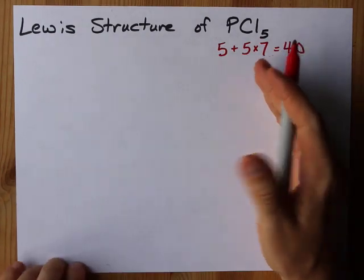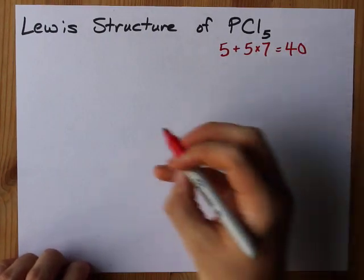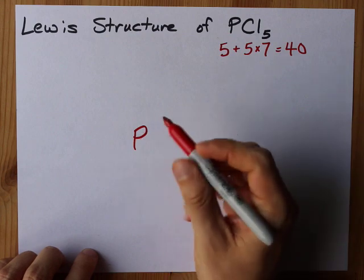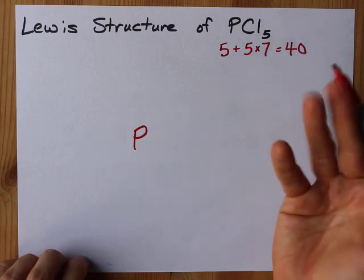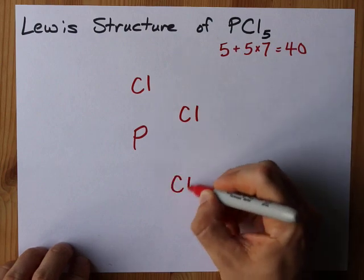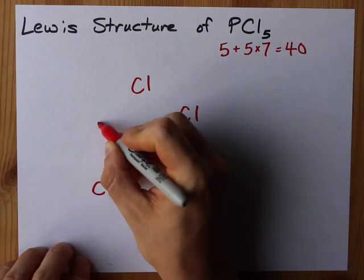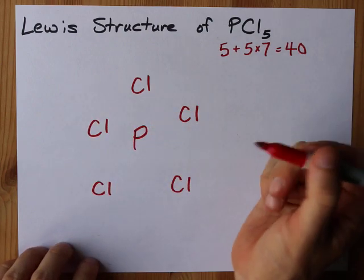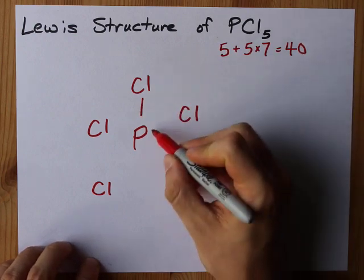Don't be intimidated. It's going to be easy. Phosphorus is going to go in the center since it can hold a lot of bonds. And I'm going to surround it with five chlorine atoms. Bam, bam, bam, bam, bam. I don't know how many times I've said bam. I'm not Emeril Lagasse. Let's see.